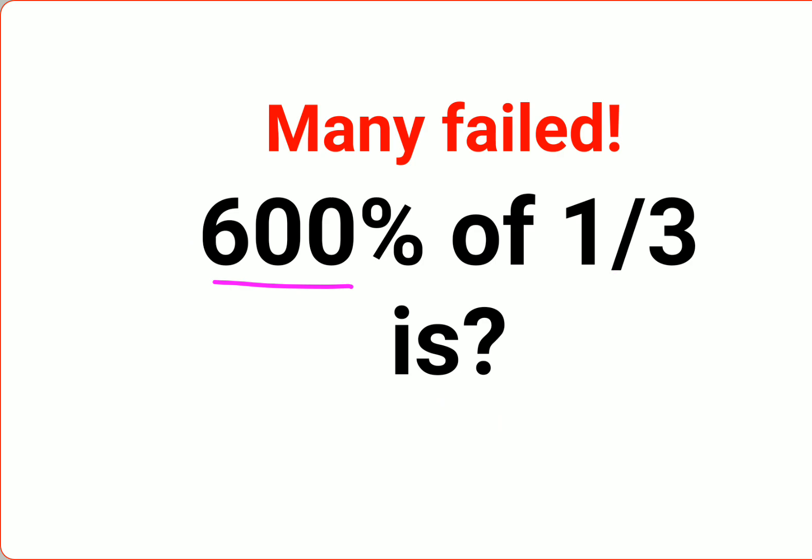Now whenever you come across questions like this, the very important thing, in fact the first step you should do, is write the entire question in terms of its mathematical form. So 600% of means multiplication, 1 upon 3, is equal to let's say we need to find the value of A.